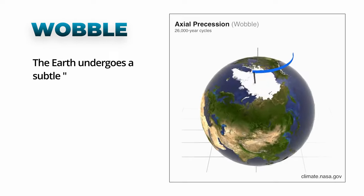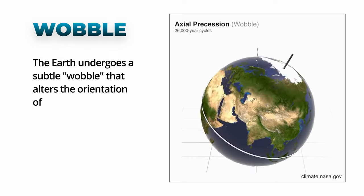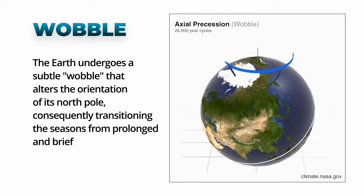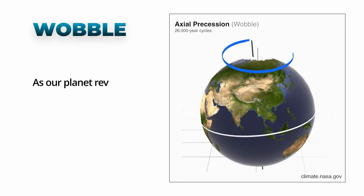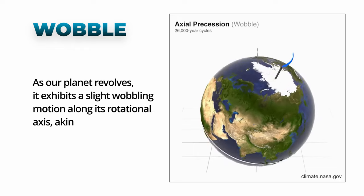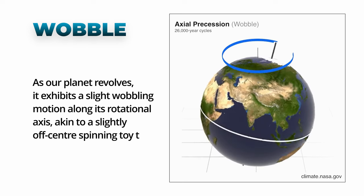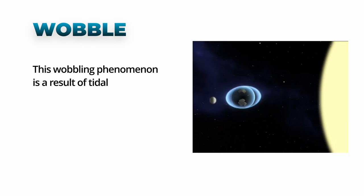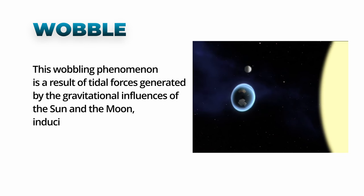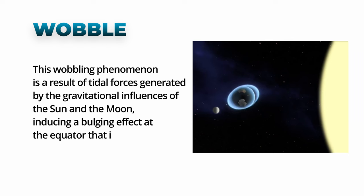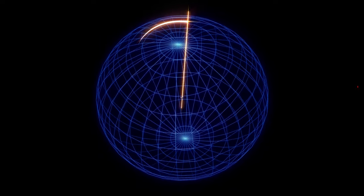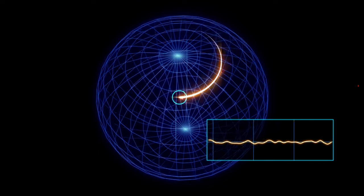The Earth undergoes a subtle wobble that alters the orientation of its North Pole, consequently transitioning the seasons from prolonged and brief to moderate and intense. As our planet revolves, it exhibits a slight wobbling motion along its rotational axis, akin to a slightly off-center spinning toy top. This wobbling is a result of tidal forces generated by the gravitational influences of the Sun and the Moon, inducing a bulging effect at the equator that influences Earth's rotational dynamics and in turn affects the ice age phenomena.